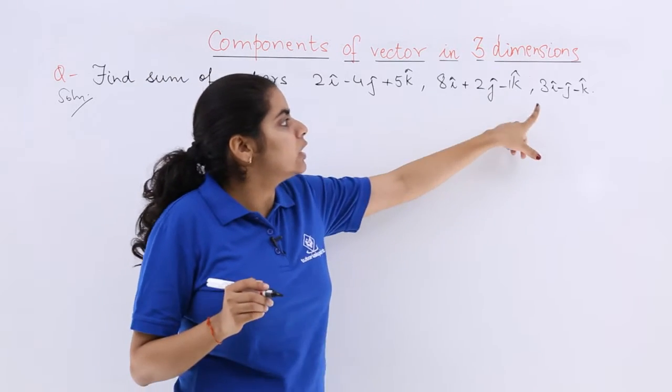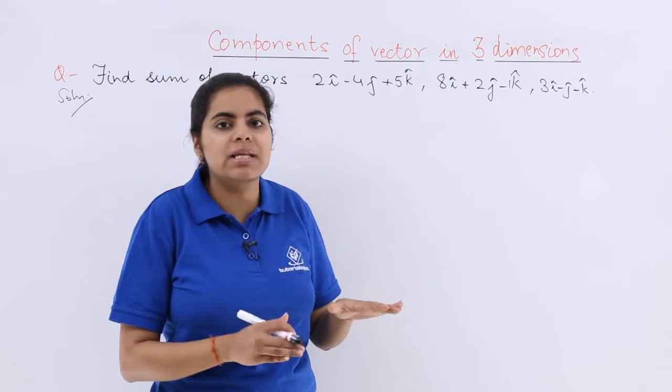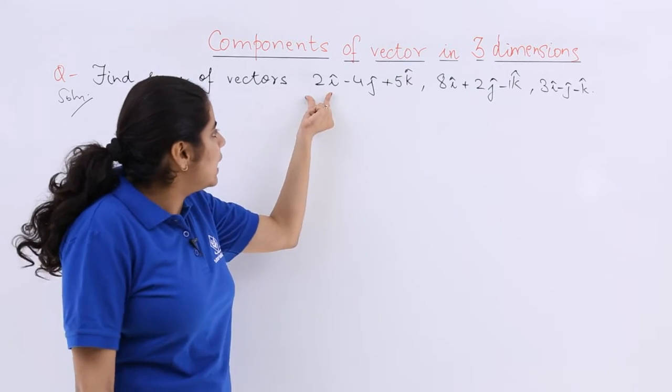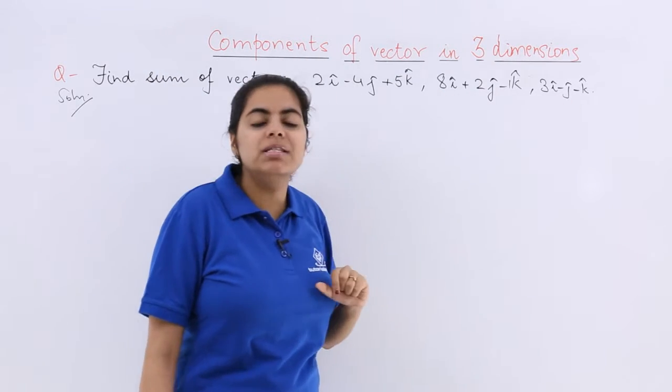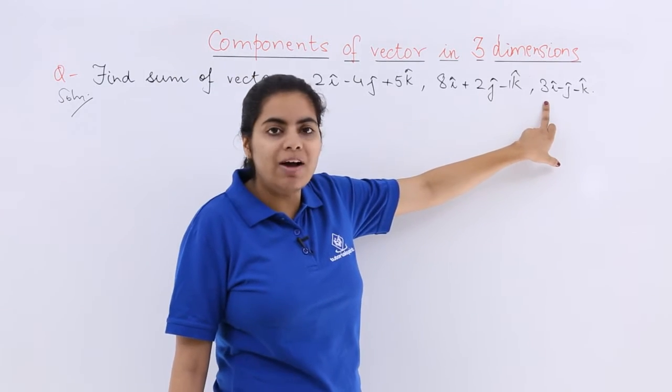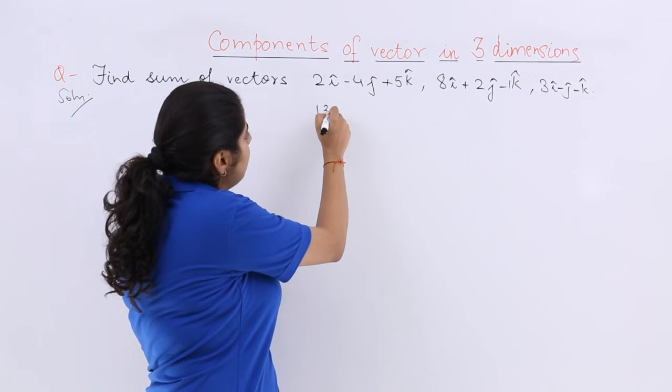Now sum means you have to add all these up. But addition of like terms and unlike terms is always separate. So what are the like terms? i cap, i cap, i cap is the like term. So 2, 8, and 3 all have plus sign. So directly plus them. 2 plus 8 is 10 plus 3 is 13i cap.